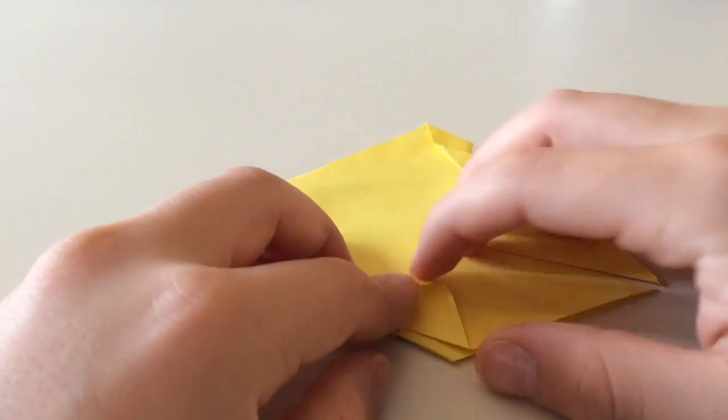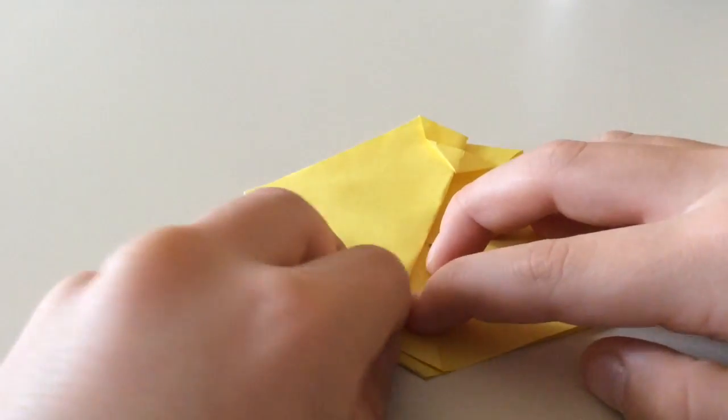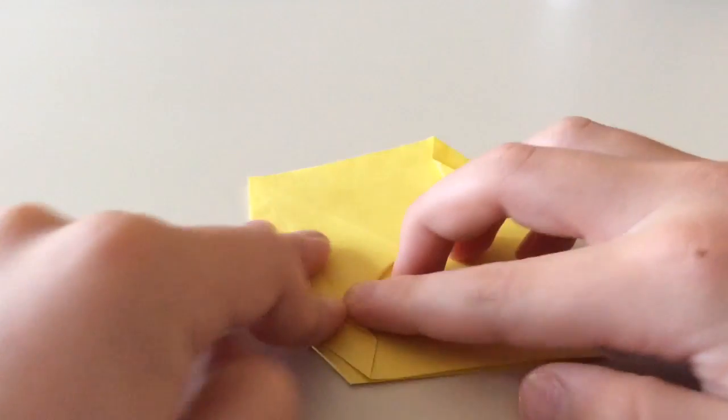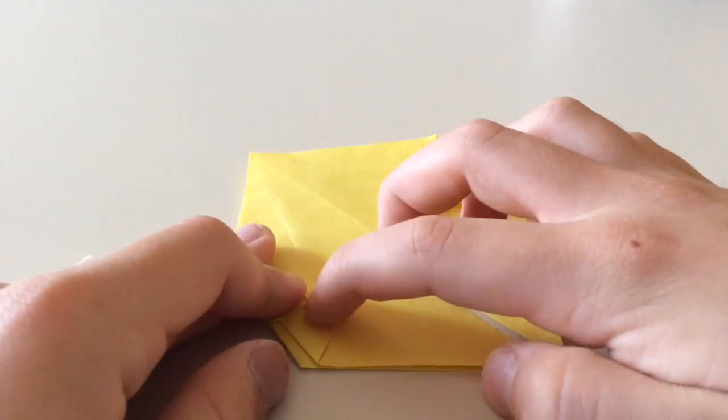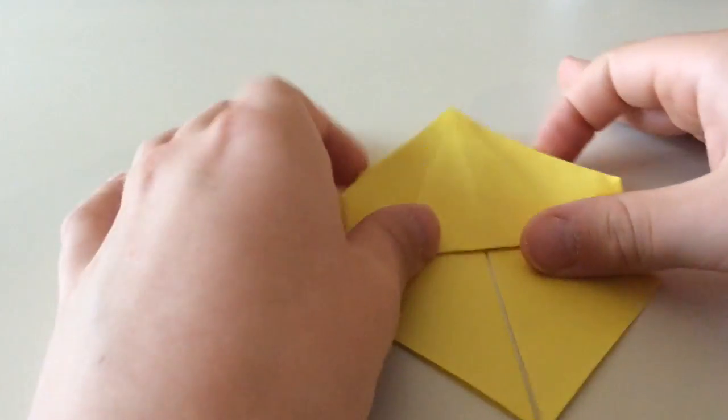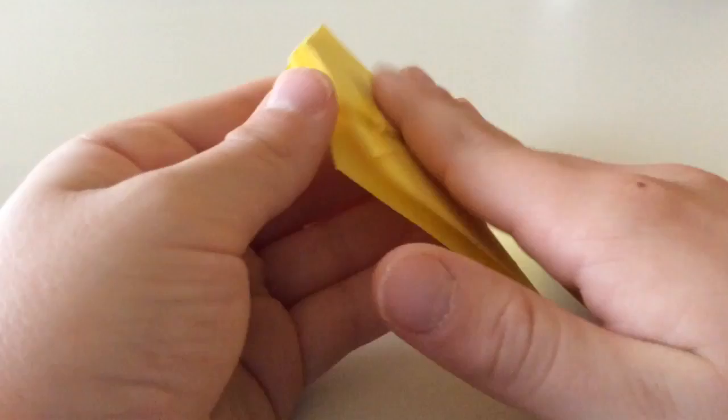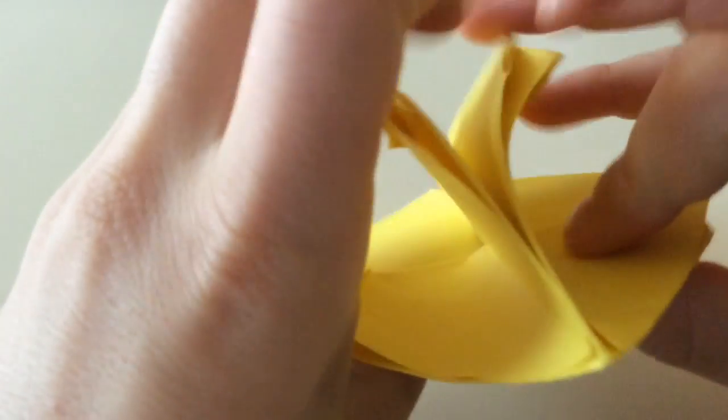Take it so that this little crease ripped. Whatever, it's okay. It won't really affect the model that much. So you see that this crease is running down that line. That's good. Now we're just gonna turn it over. And like this. And open it. Do the same on the other side.